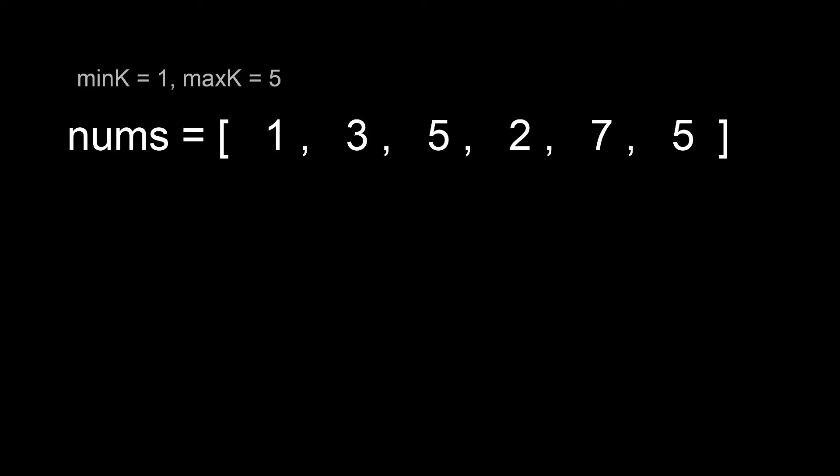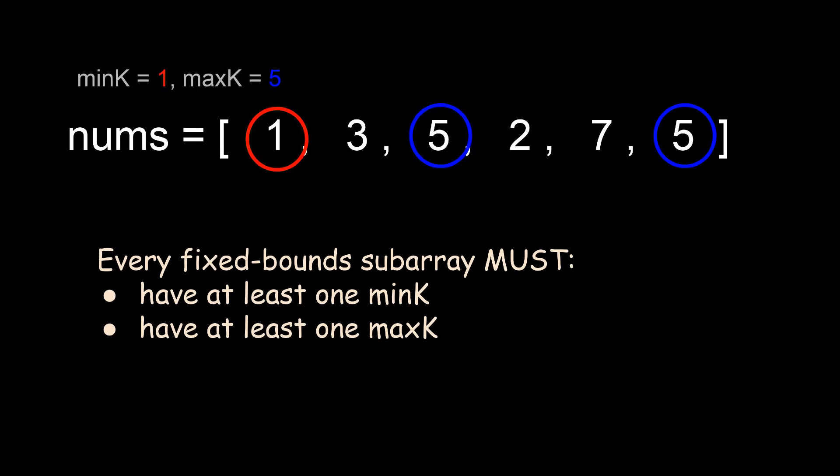Alright, are you ready? The first thing I like to do when faced with a new problem is just play around with a few examples and see if I can observe a pattern. Let's look at example 1 and try and solve it by hand. The first thing we notice is that for any subarray to be valid, it has to contain at least one copy of min k and one copy of max k. This makes sense, right? If you want the subarray to have a minimum equal to min k and a maximum equal to max k, then it has to contain at least those two numbers.